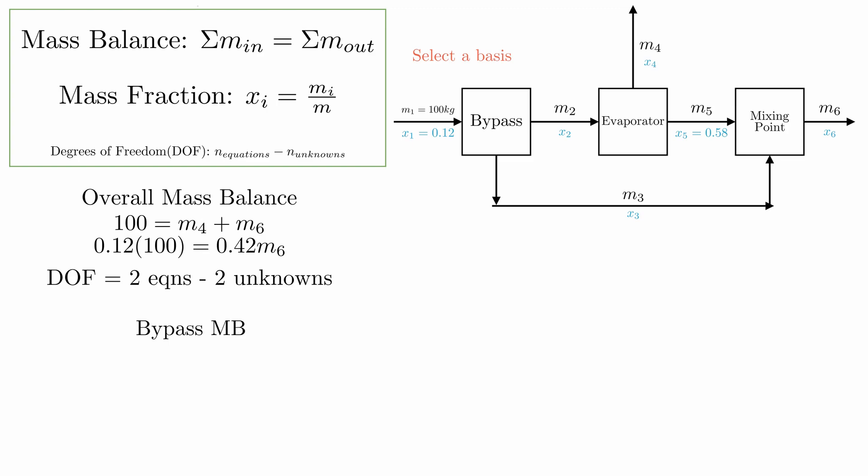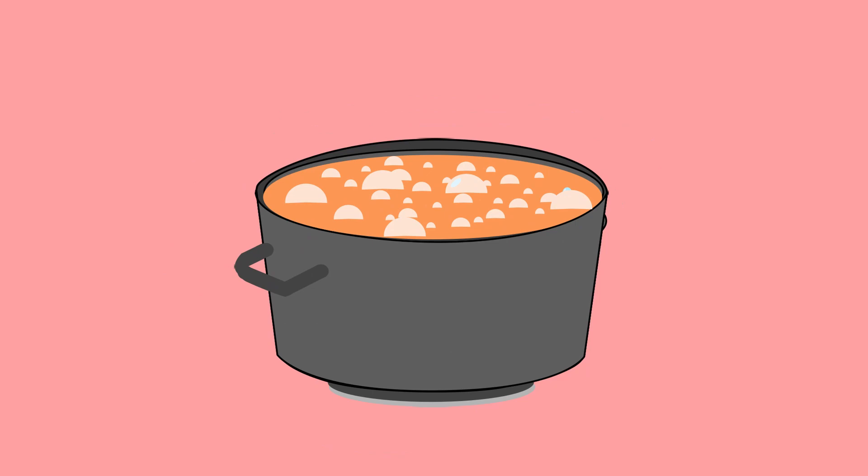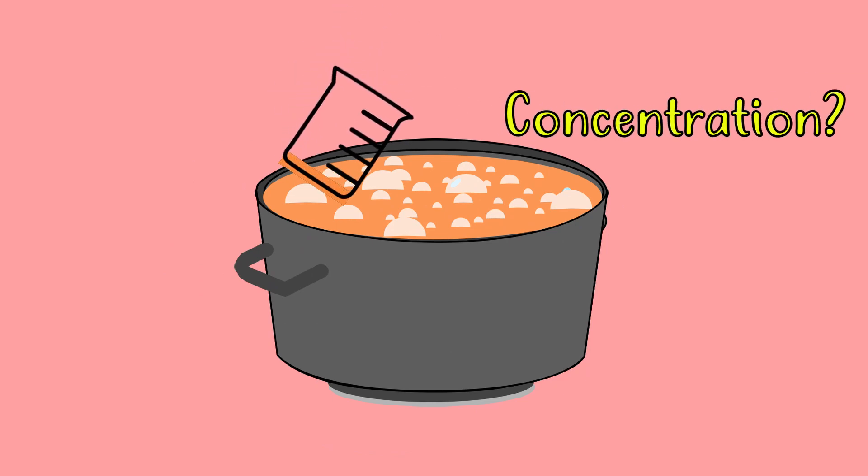Next, we do the same exact thing for the bypass. We have our overall mass balance using M1, M2, and M3. We know M1 as 100 from our selected basis. And then we need to think about what the bypass actually means in terms of our mass fractions. Let's look at our system again. We have our pot of oranges and the concentration inside the pot. We take a little bit out. Is the concentration different when we took anything out?